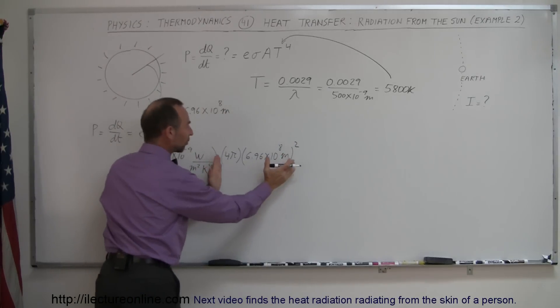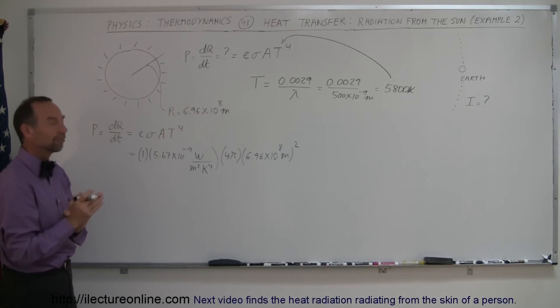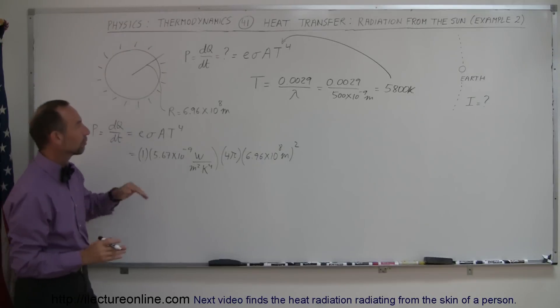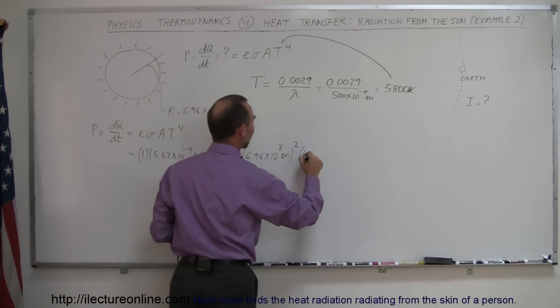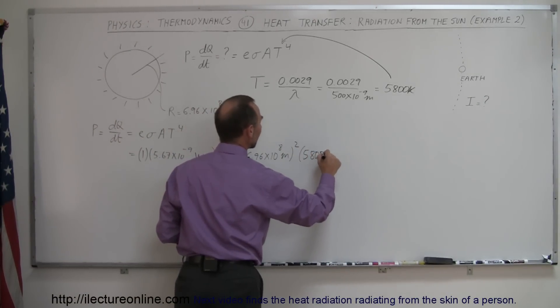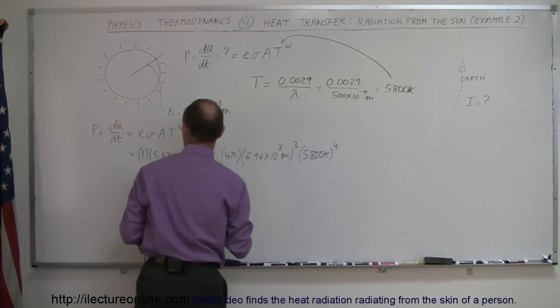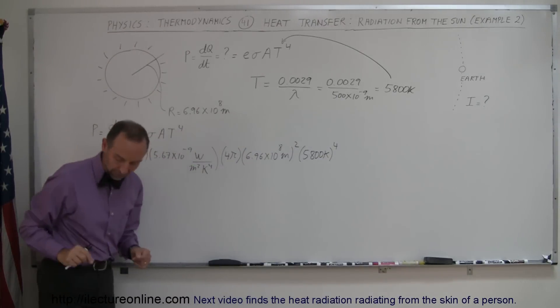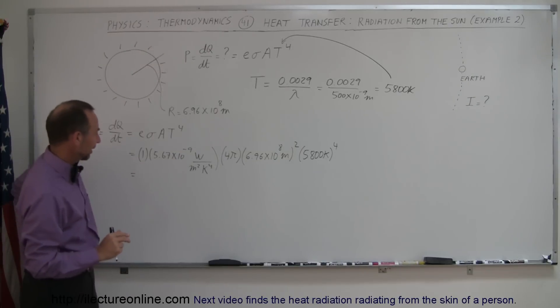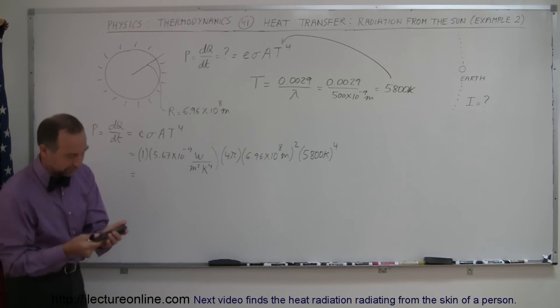So, this gives us the surface area of the sun. And then, finally, we plug in the temperature in Kelvin to the fourth power. So, it would be 5,800 Kelvin raised to the fourth power. And that will give us the energy output of the sun. And let's see here. My calculator is in my back pocket. Let's find out what that is.